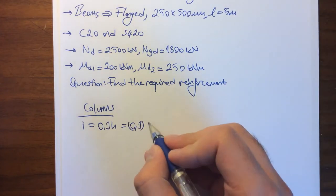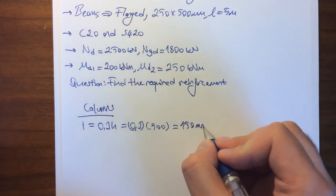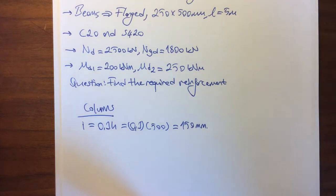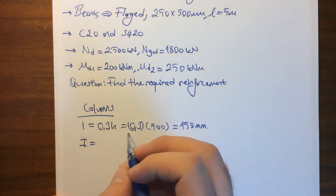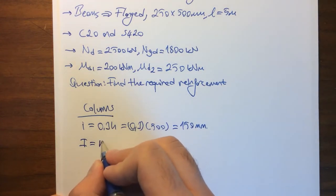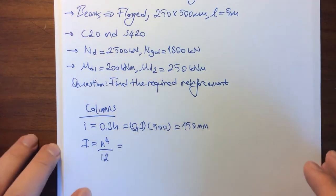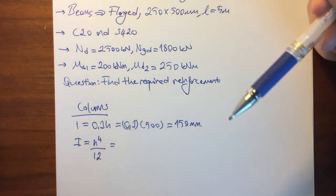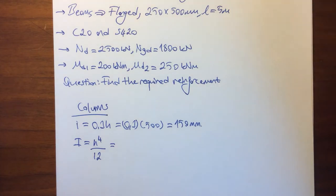For the moment of inertia for a rectangular section, we can use the formula h to the 4th divided by 12. If you are unfamiliar with moment of inertia or radius of gyration equations, briefly go over your strength of materials course notes. Let's move on: h in that case is 500 millimeters, raised to the 4th and divided by 12.